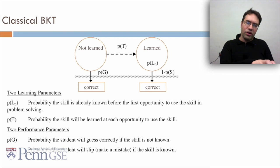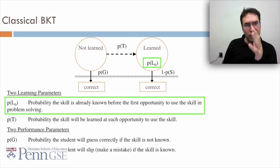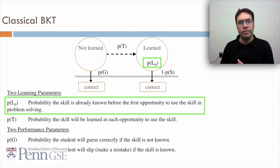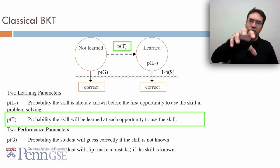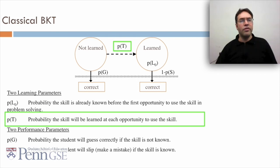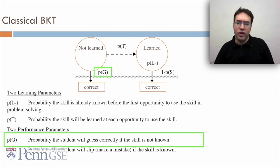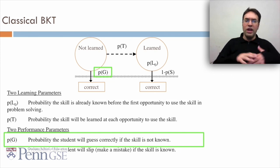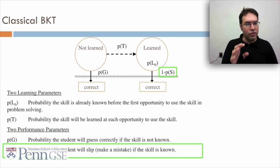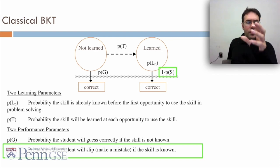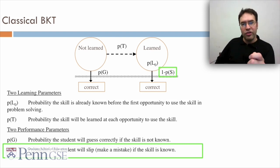So let's look at the classical BKT model now. You can see the two states on the left, not learned, on the right, learned. The first parameter, P(L0), is the probability that the student already knows the skill before their first opportunity to use it in problem solving. In other words, students don't come into our learning as a blank slate. They come in already having a certain probability of knowing what we want them to know. Second, P(T), the probability that the skill will be learned at each opportunity to use the skill. If our system promotes learning at all, students' performance should get better over time. They should actually learn, and P(T) accounts for this. P(G), the probability the student will guess correctly if the skill is not known. So even if it's not learned, even if they haven't learned the skill, there's still a certain probability they'll get it right. And P(S), the probability that the student will slip and make a mistake even if the skill is known. Now notice that the probability of correct given that you know it is 1 minus P(S). In other words, if there's a 20% chance that you'll slip, then there's an 80% chance you'll get it right if you know it.